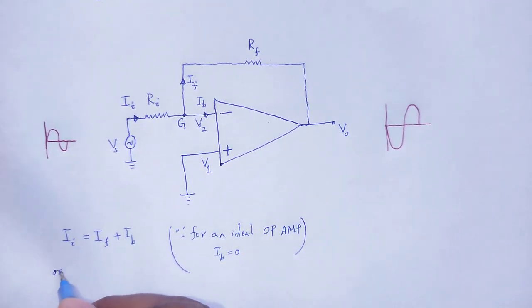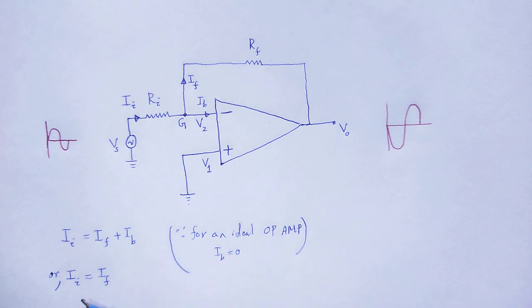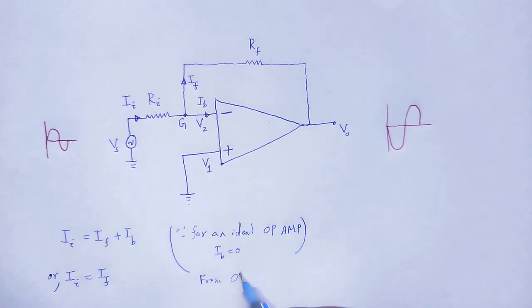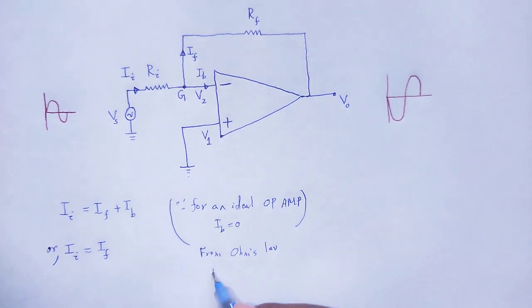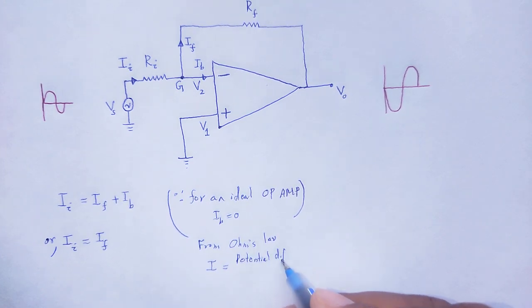Now, that expression changes. Ii is equal to If. From Ohm's law, the current is equal to potential difference divided by resistance.